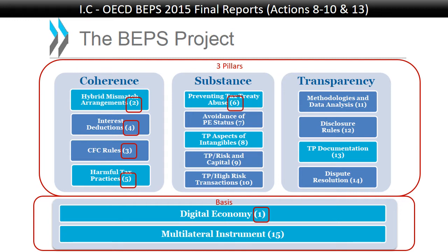The next set of action points dealt with substance. The first was to stop treaty shopping, done through a principal purposes test — as discussed under the UN commentaries — and the limitation on benefits test. Also by changing the heading of the treaty to say very clearly that the treaty is both there to stop double tax but also double non-tax. The next action point dealt with PE status, trying to stop companies from avoiding having PEs in different countries, for instance through commissionaire structures.